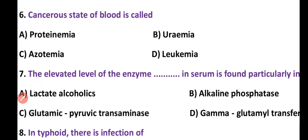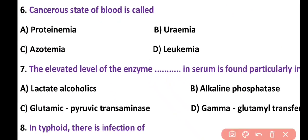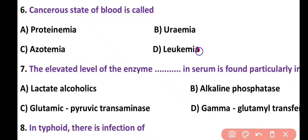Question 6. Cancerous state of the blood is called: proteinemia, uremia, azotemia, or leukemia. Correct answer is option D. Leukemia is a blood cancer or cancerous state of the blood. So the correct answer is option D.